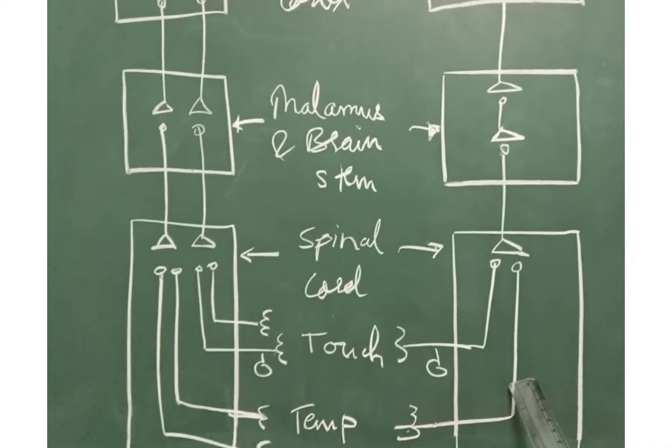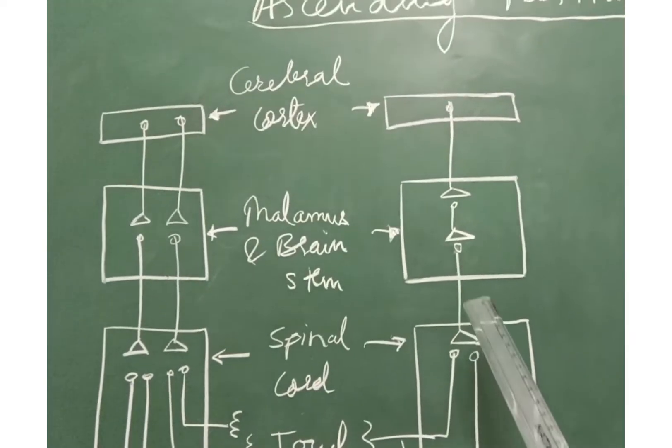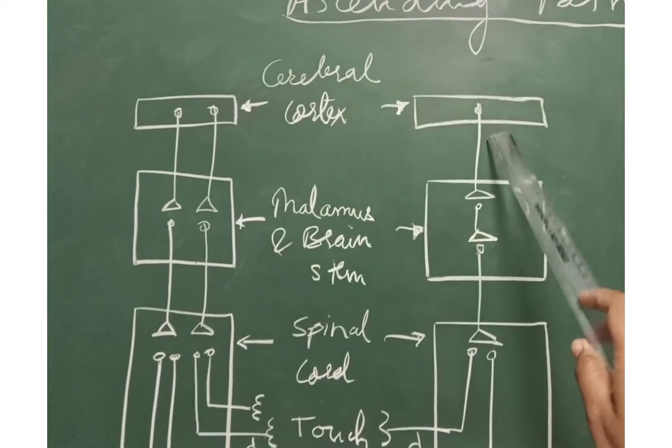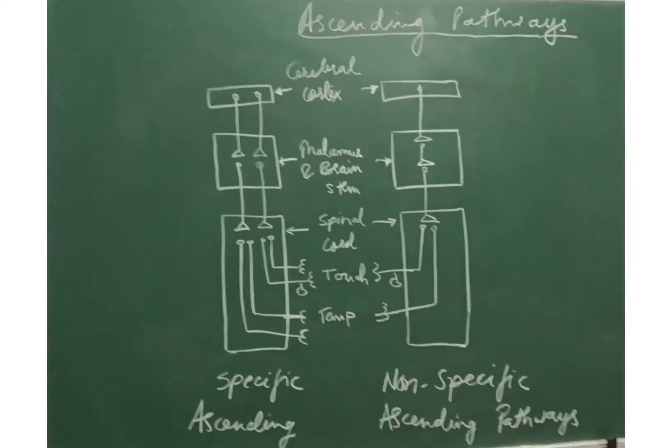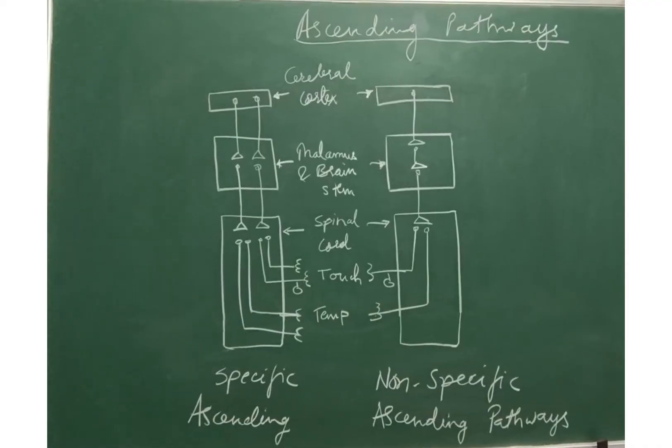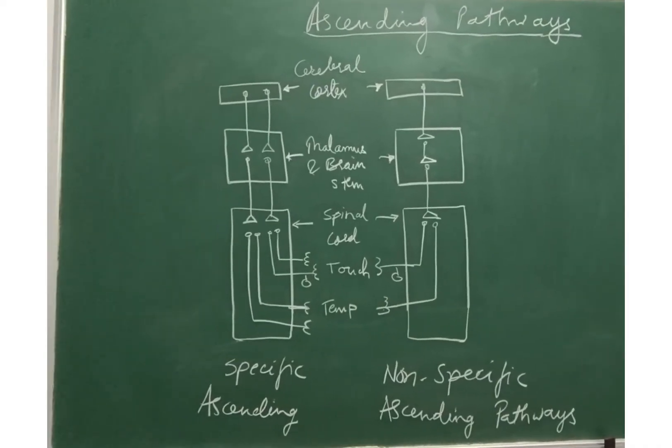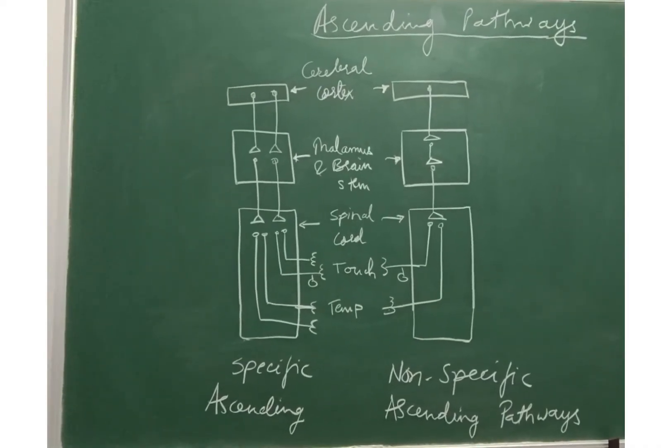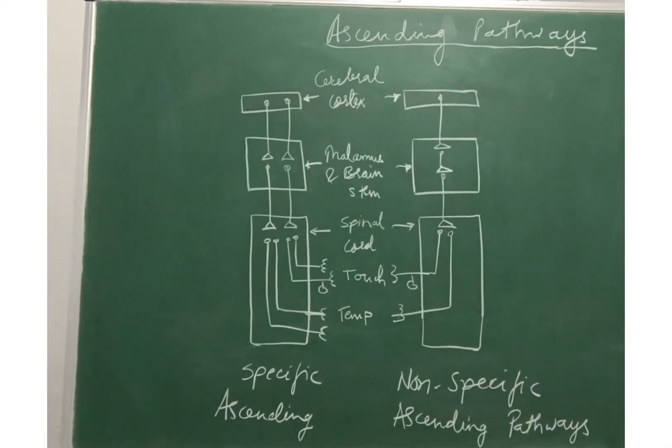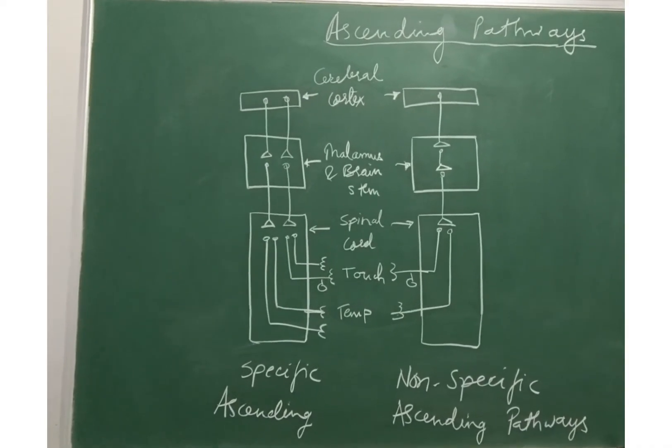While non-specific ascending tracts, the neurons are activated by sensory units of different types which signal only general information without telling us what is happening where. Hence they are known as non-specific ascending tracts. Specific ascending pathways transmit information from somatic receptors like receptors in skeletal muscle, tendon and joints.